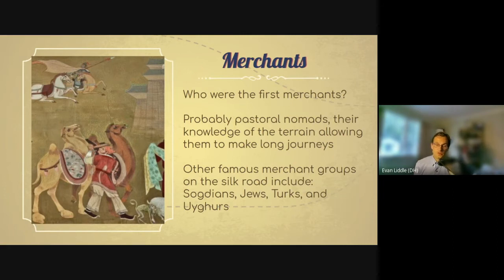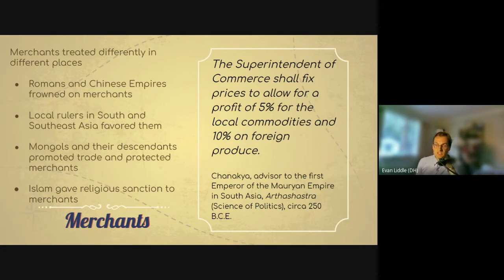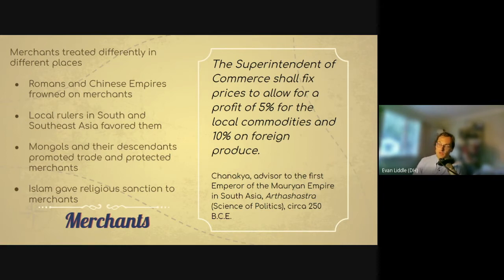Merchants were treated differently depending on where you were. The Roman Empire and most Chinese dynasties tended to frown on merchants, viewing them as sly and getting rich just by moving things around. Places like South and Southeast Asia favored merchants and even allowed them to become rulers. The Mongols and their descendants most famously promoted and protected merchants. Islam gave great religious sanction to merchants — in part because the Prophet of Islam had been a merchant before his revelations. So depending on where you were along the Silk Road, merchants could be smiled upon, frowned upon, or treated very well.